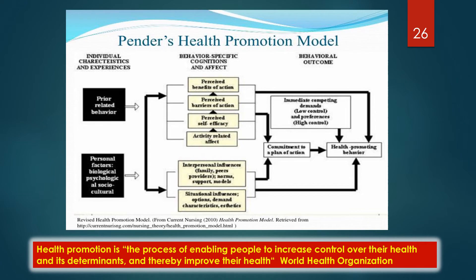This slide is a representation of Pender's health promotion model. The first column lists personal and historical influences on behaviors, including prior experiences and personal biological, psychological, and socio-cultural factors. The middle column lists specific cognitive influences, including a person's perceptions of benefits, barriers, efficacy, and activity-related impacts. Interpersonal influences of family, peers, models, societal and community norms, situational influences, and immediate competing demands also have an impact. All of these influences ultimately impact individual decisions and the final output — health-related behaviors. Health promotion and disease prevention strategies aim at neutralizing negative and enhancing positive influences of this model.